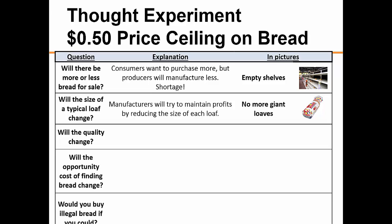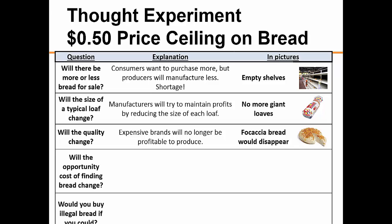Secondly, producers can maintain their profit by reducing the size of each loaf of bread, so we no longer see giant loaves. They can also lower the quality of the product by using cheaper ingredients and give up production of fancier varieties — a consequence that we did not foresee when establishing the maximum price for bread. We know that loaves of bread will become harder to find, smaller, and generally of lower quality.